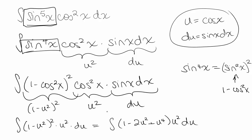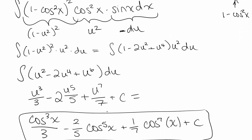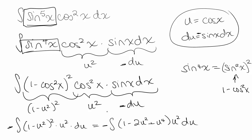One thing to be careful of: when you take the derivative of cosine, you actually get a negative sine. So when you make the substitution, instead of substituting sine of x dx for du, you're going to get a negative du, meaning your entire integral is going to be negative. This is also true later when we talk about secants and tangents — when you're substituting for a co-function like cosine instead of sine, secant instead of cosecant, or tangent instead of cotangent, the same techniques work, except you must remember that negative sign when you take the derivative.